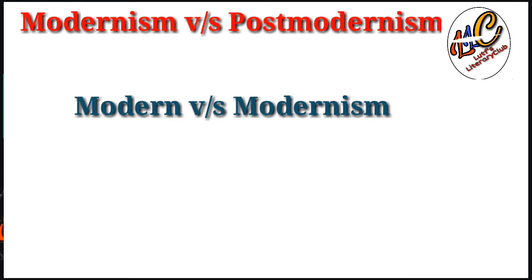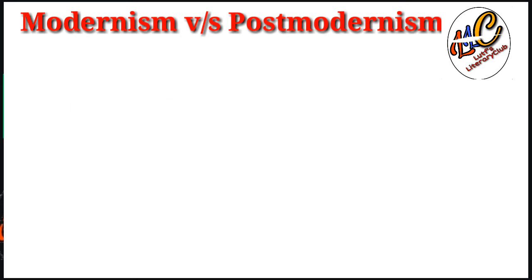Par 'modernism' ek literary movement hai jo 1910 ke karib shuru hui. Is daur mein T.S. Eliot ne 'The Waste Land' likhi, Virginia Woolf ne 'To the Lighthouse', aur James Joyce ne 'Ulysses'. In sab writers ne ek literary trend set kiya aur modernism ek literary movement ban gaya jiske baad ek aur literary movement start hui — jise hum post-modernism kehte hain.